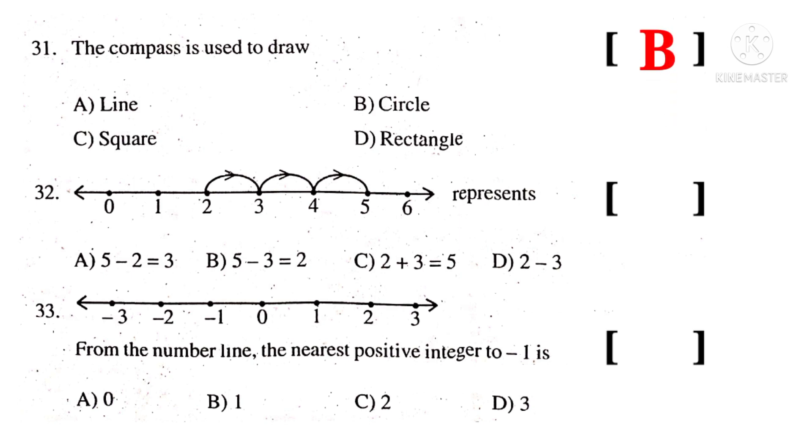32. See the number line and observe the first number is 2. Now observe the arrow mark symbol showing right hand side. So it shows plus operation. And observe the number of jumps are 3, so plus 3. So 2 plus 3 is equal to 5 is the operation shown on the picture. So the correct choice is C.